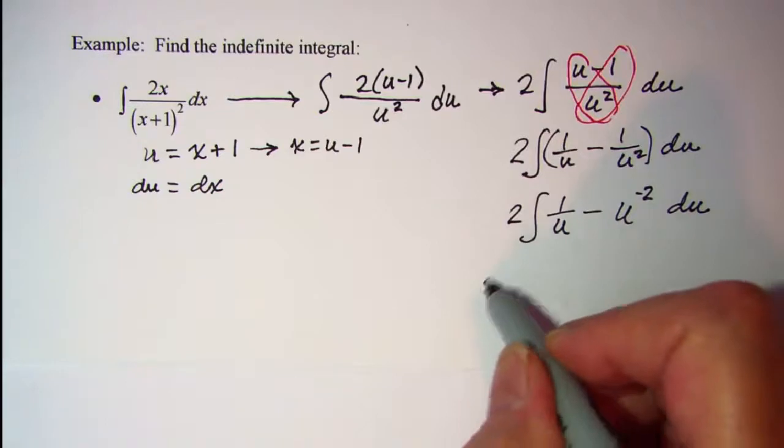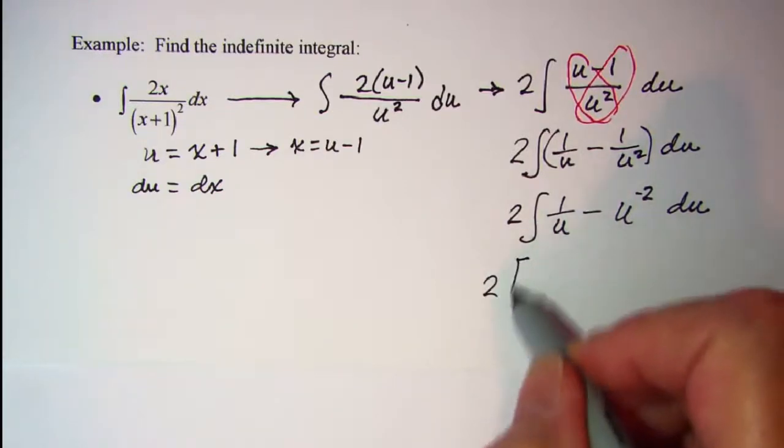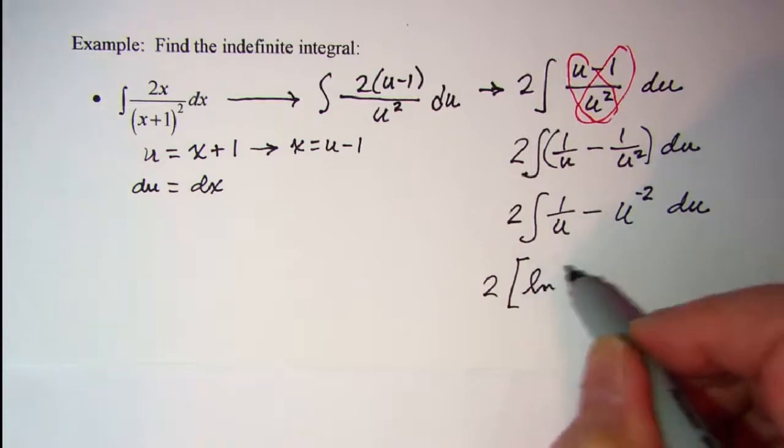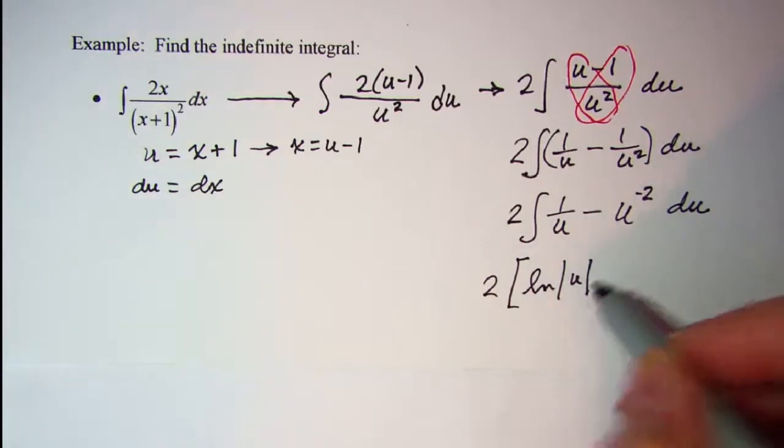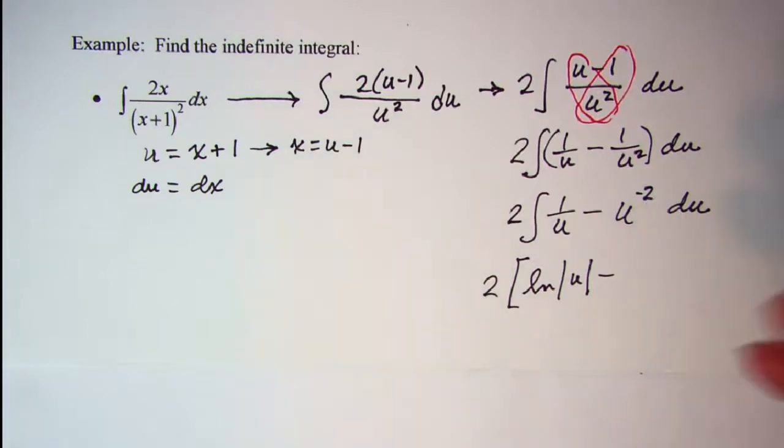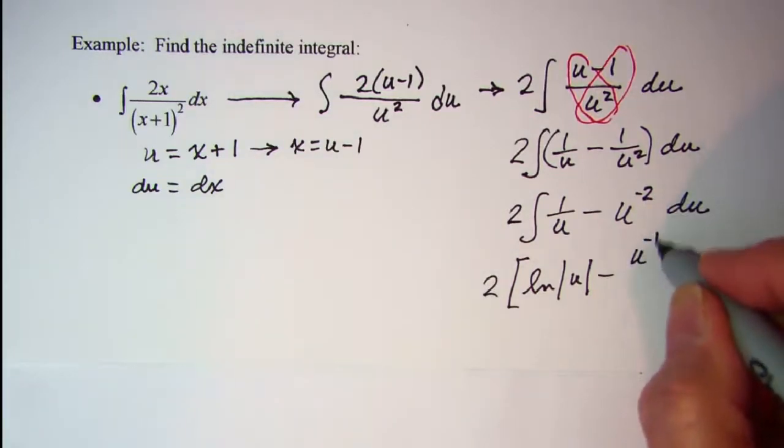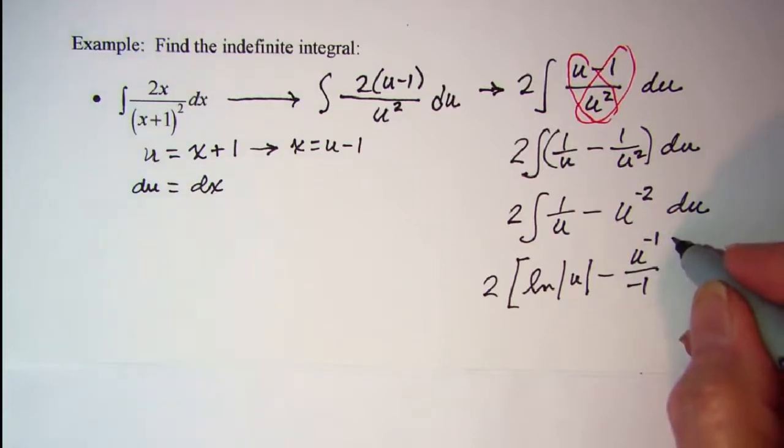So the integral of 1 over u is ln absolute value of u. The integral here, we increase the exponent by 1. So that will be a negative 1 and then divide by the new exponent. So I have u to the negative 1 divided by negative 1, and then plus my constant.